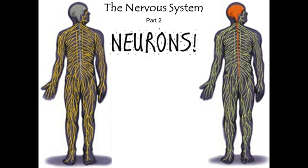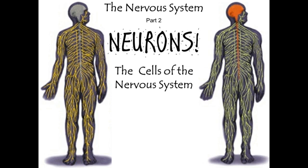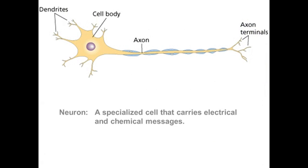This is part two of the nervous system and we're going to be talking about neurons. Neurons are cells of the nervous system — the individual cells that make up your brain, spinal cord, and all the various nerves and organs of the peripheral nervous system. A neuron is just a specialized cell that carries information in the form of both electrical and chemical messages.